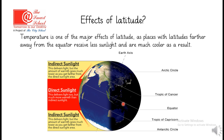This is the Equator, this is the Tropic of Cancer, this is the Arctic Circle, this is the Tropic of Capricorn, and this is the Antarctic Circle. The sunlight reaches these areas directly, and these areas receive indirect sunlight. So places near the Equator are hotter compared to places which are farther away from the Equator.